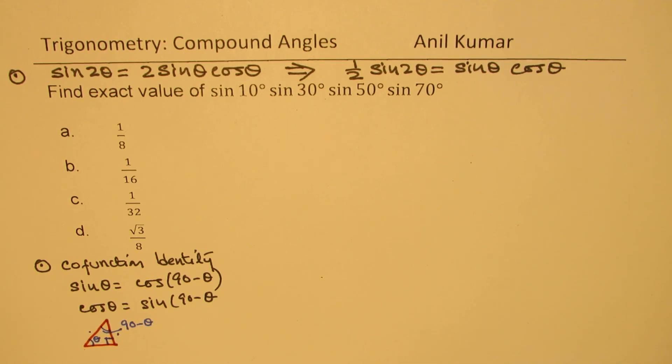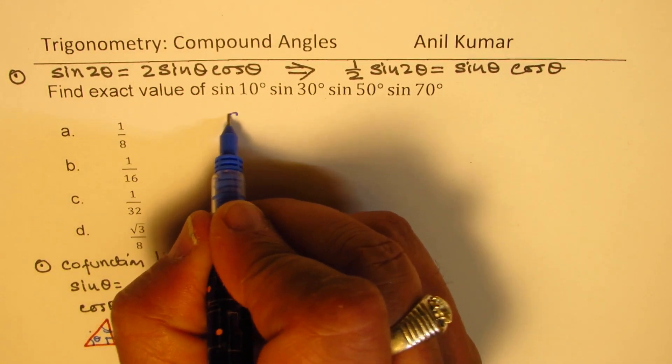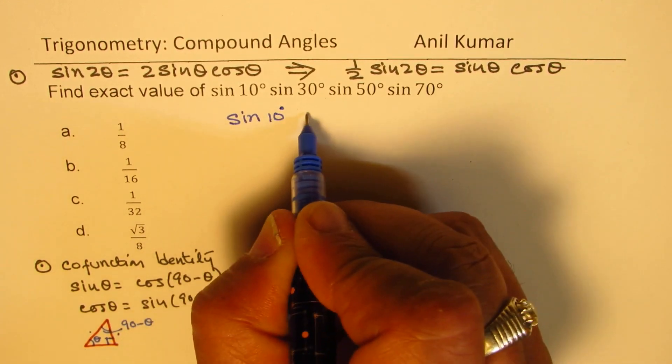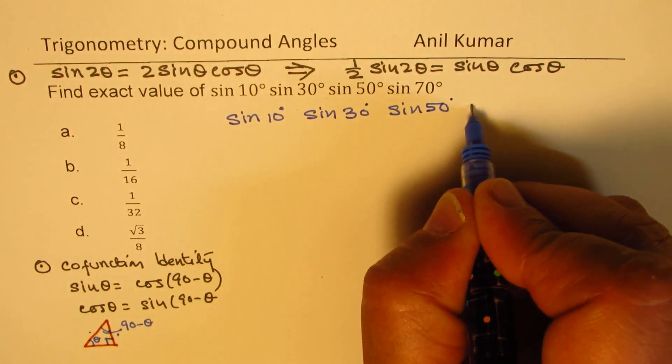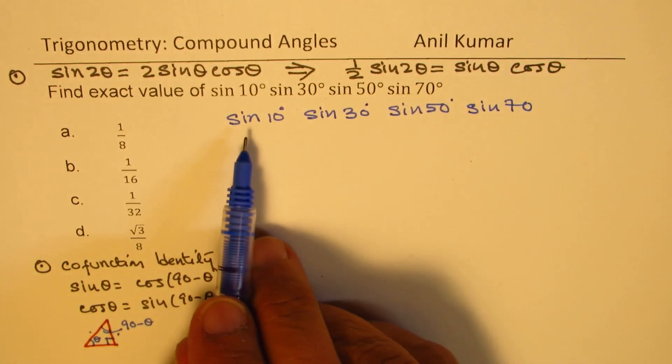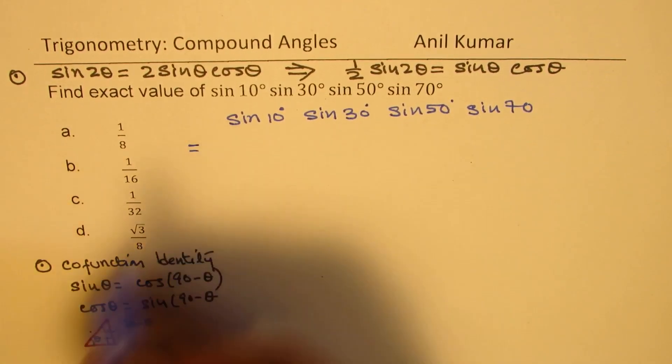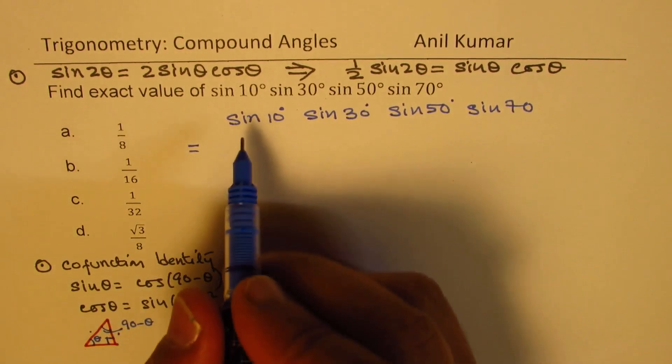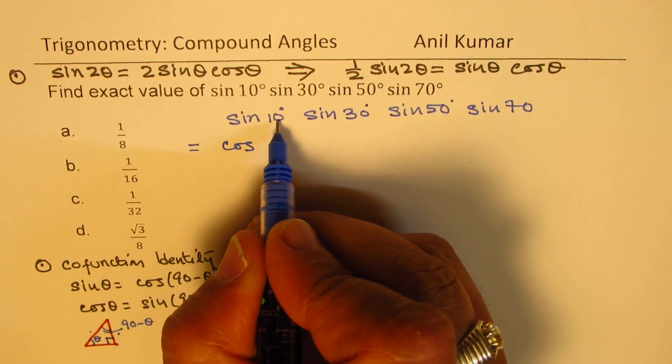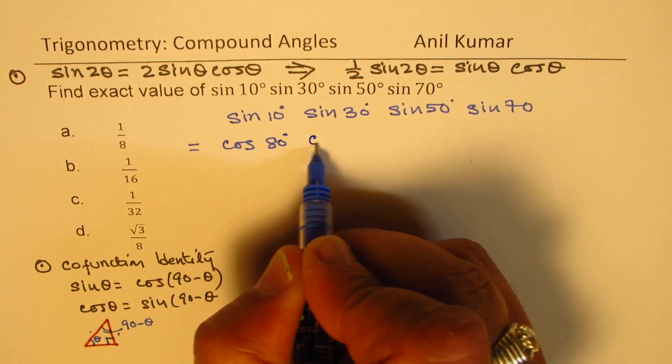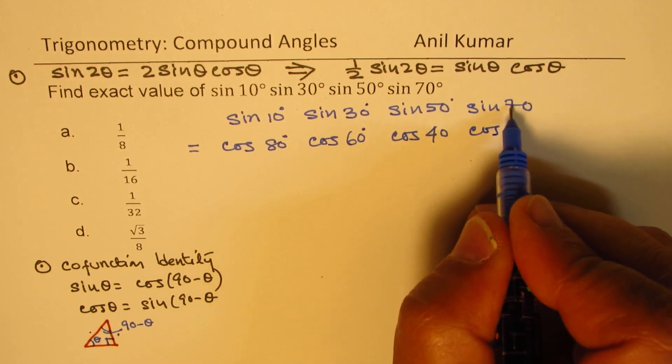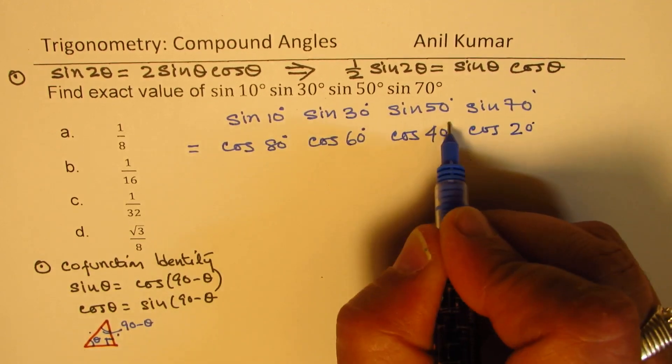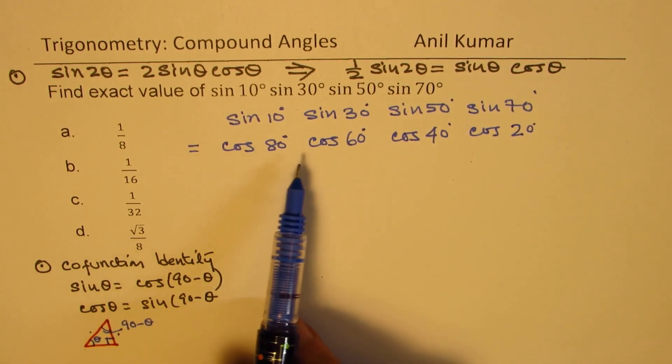With that, you would actually pause the video and answer this question. Let's see how to answer. Now, we are given sine of 10 degrees times sine of 30 degrees times sine of 50 degrees times sine of 70 degrees. We can convert them into cosines using co-function identity. So, we could write this as cos of 80 degrees, cos of 60 degrees, cos of 40 degrees, and cos of 20 degrees. First step is to convert them into cos.